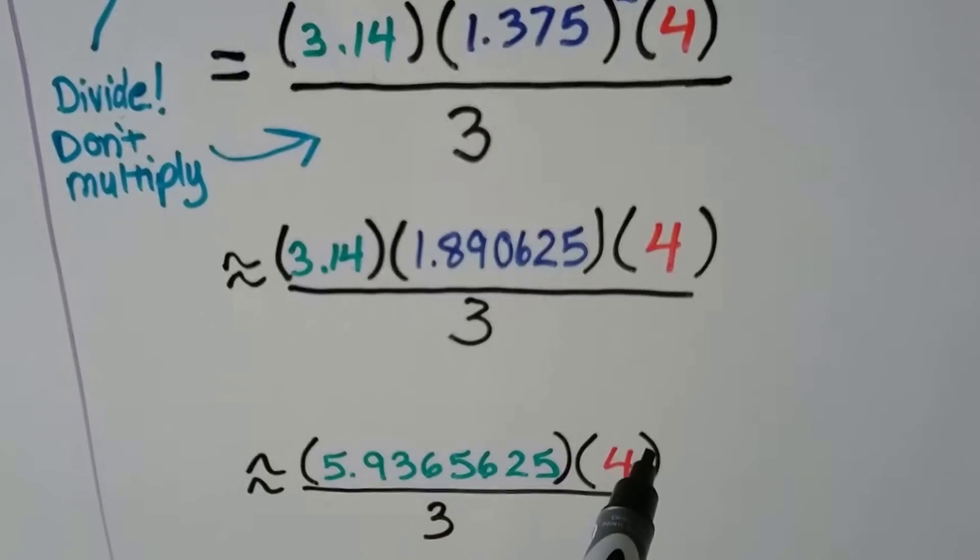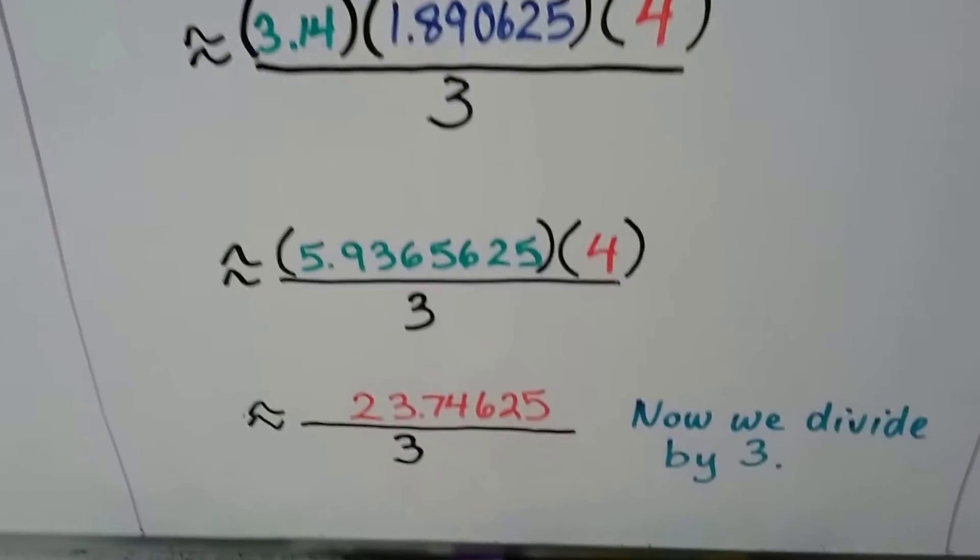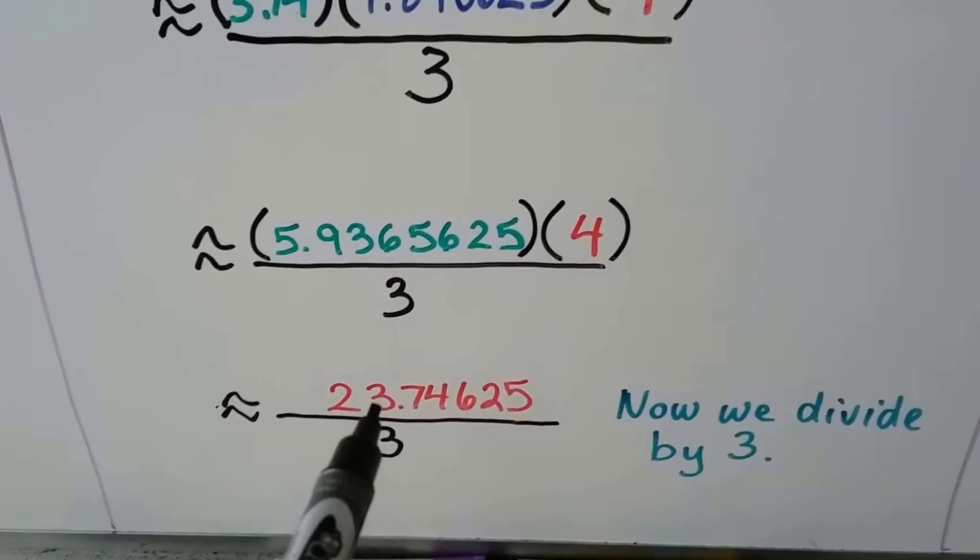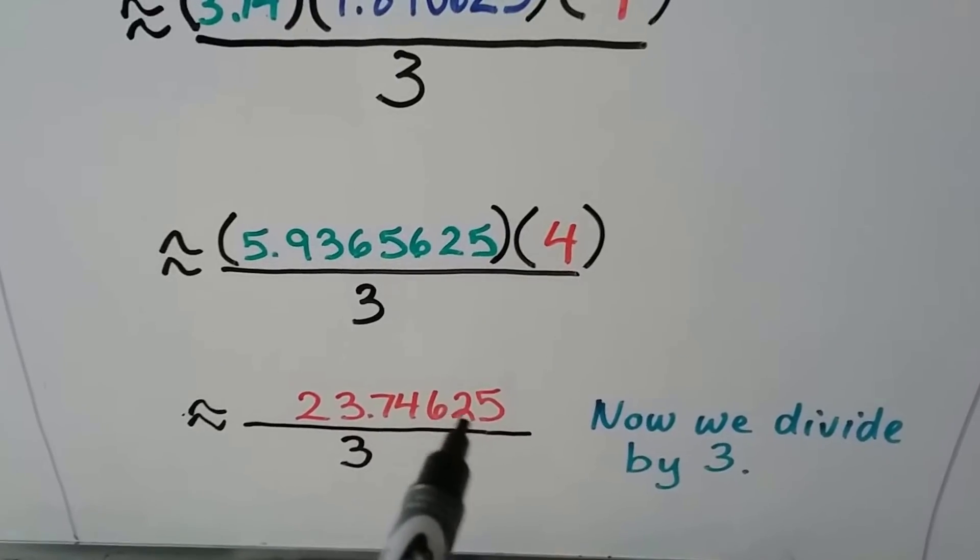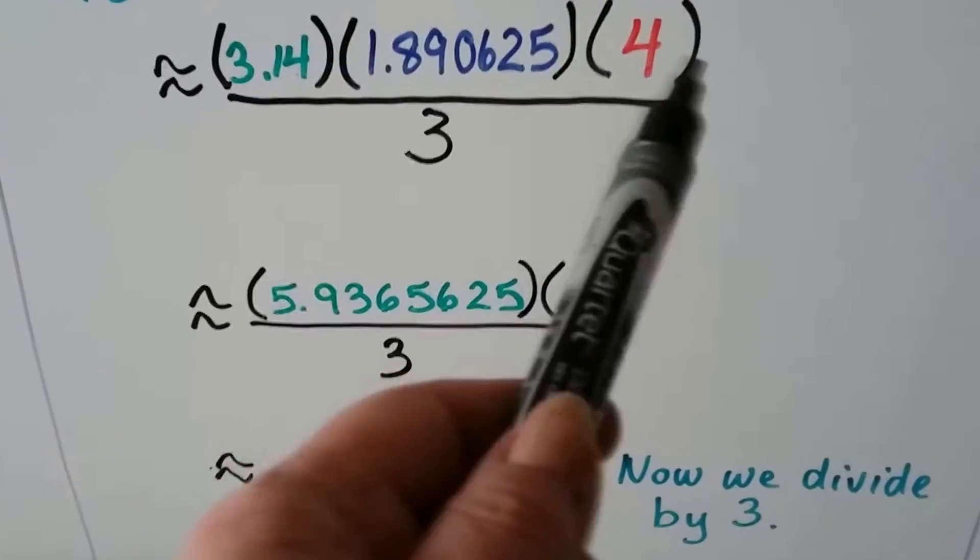We need to multiply it by the height 4, and we do that. We get 23.74625. Now we did everything that was in the numerator.